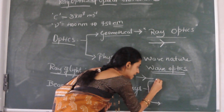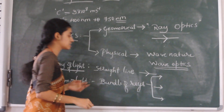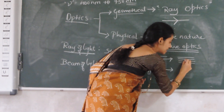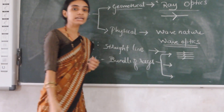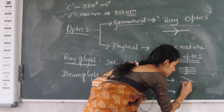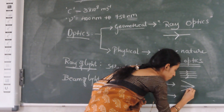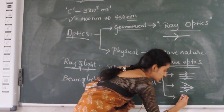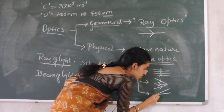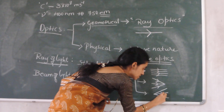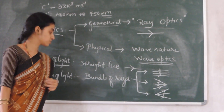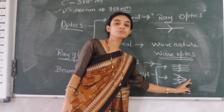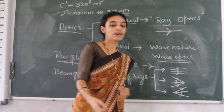A bundle of rays — that is, a beam of light — can be represented in three types: parallel beam of light, convergent beam of light, and divergent beam of light. From one single point, light travels in different directions.